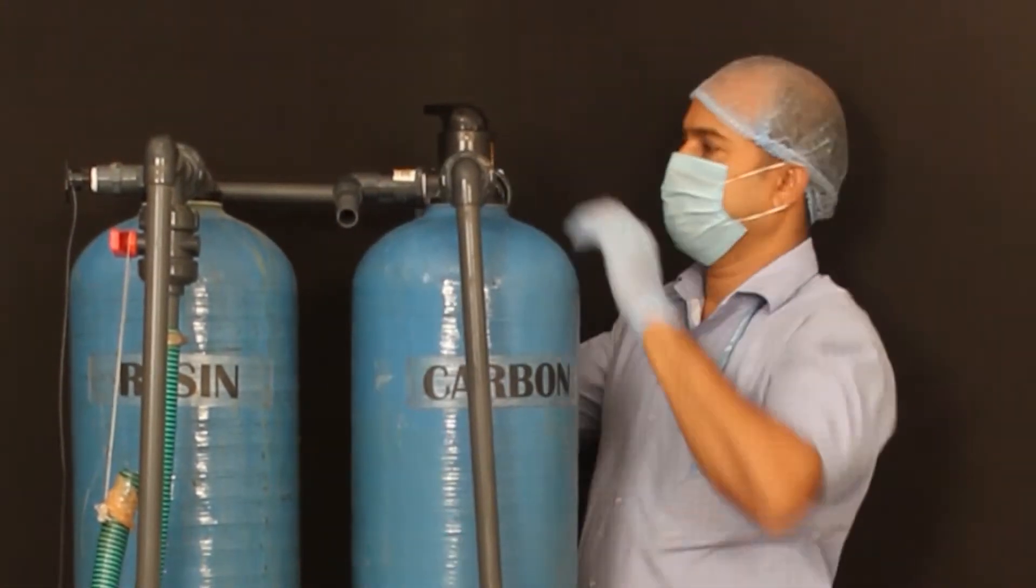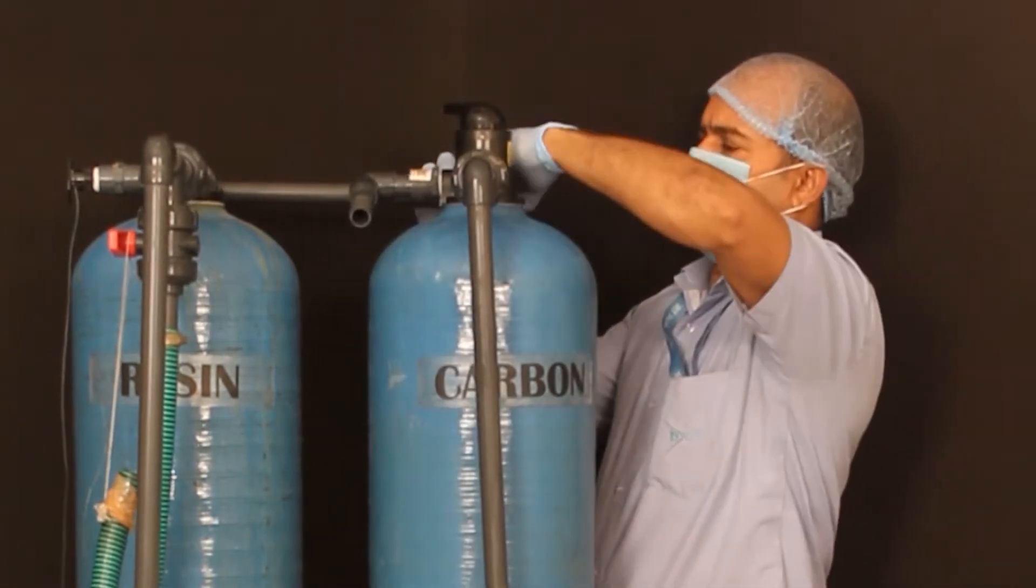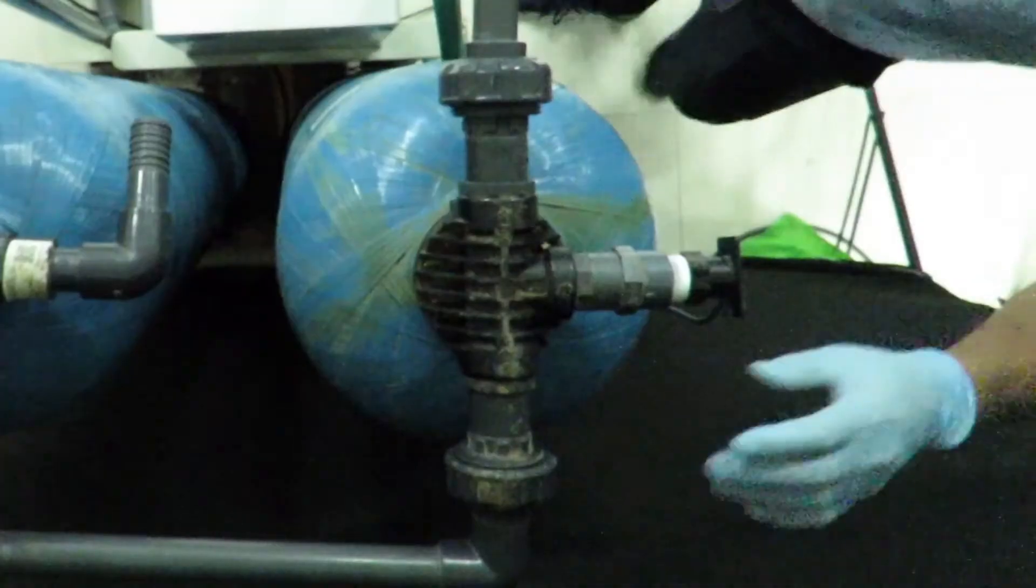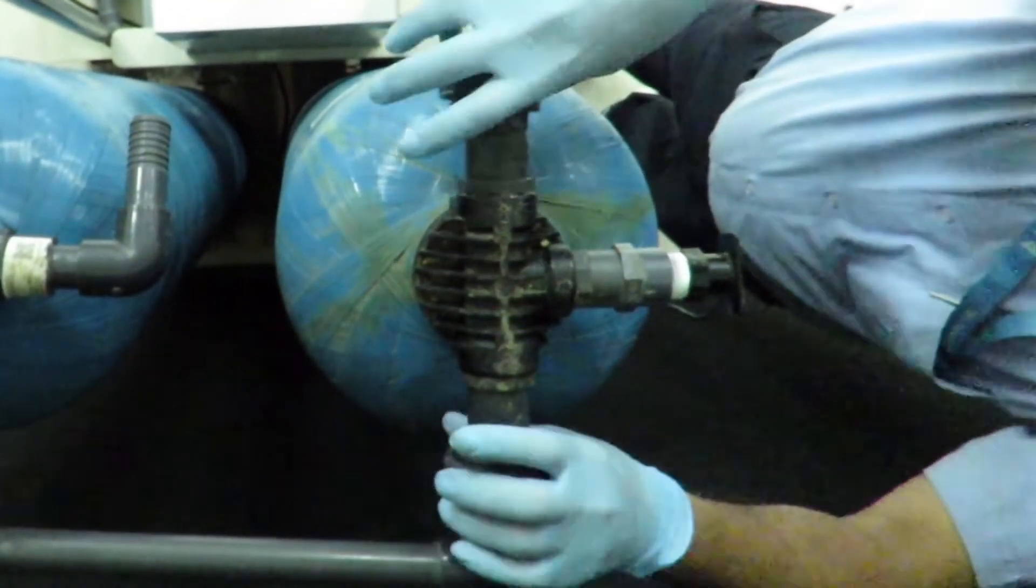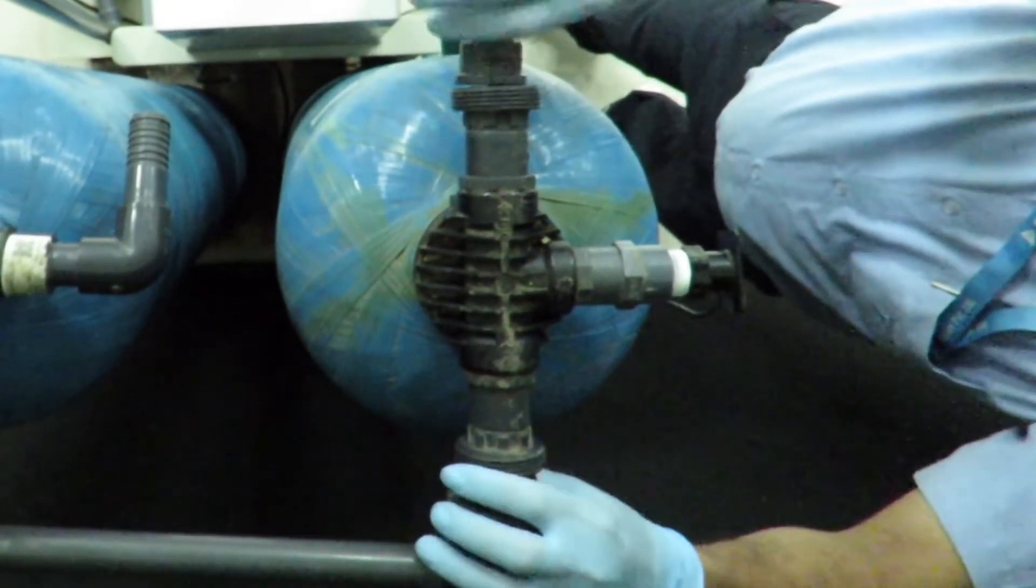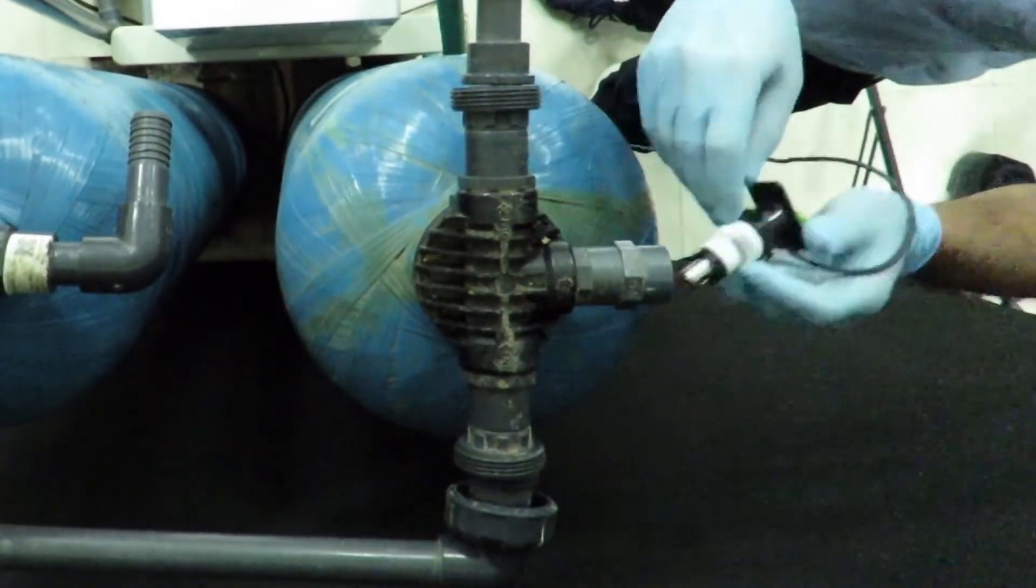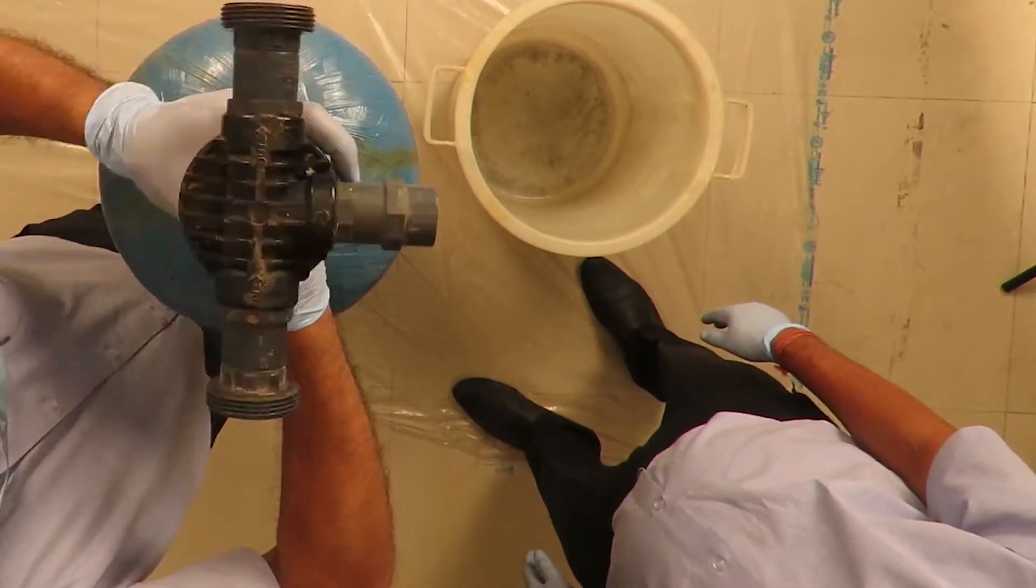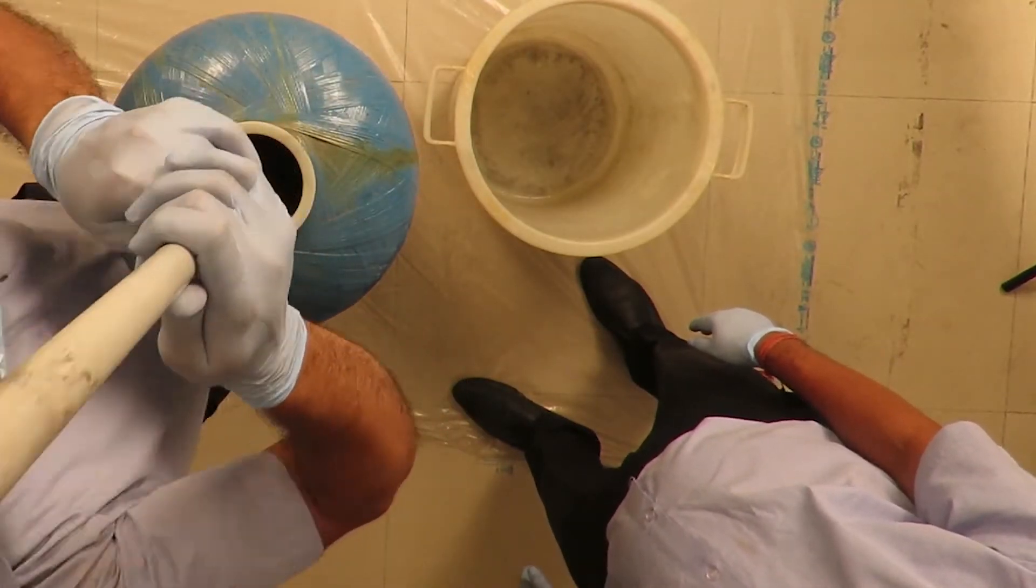Ensure O-rings are mounted at the PVC union fittings to avoid leakages. Remove the connections of the resin cylinder from DM plant. Take out the TDS sensor. Remove the upper cap and the pipe from the resin cylinder and empty the resin thoroughly.